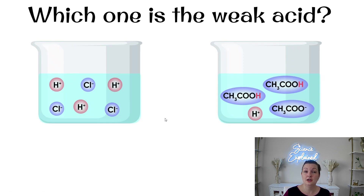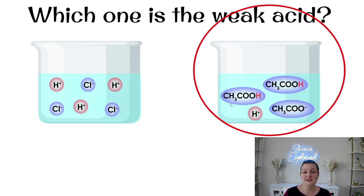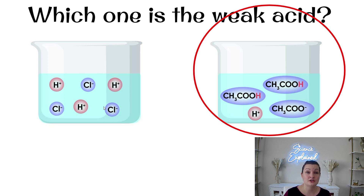So which one is a weak acid? Pause your video and see if you can get this right. The weak acid is the one where some molecules are still holding together — there's only one H positive that has broken down and dissociated. This is only partial dissociation. In the other one, they've all broken down — that is full dissociation with a lot more H+ ions present.